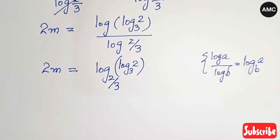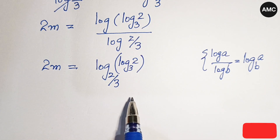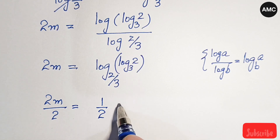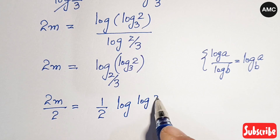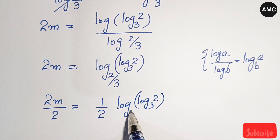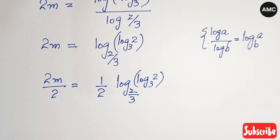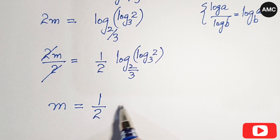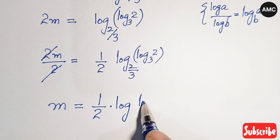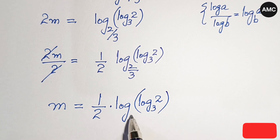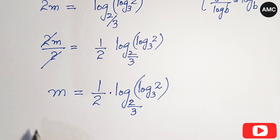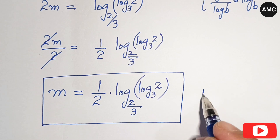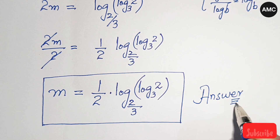Dividing both sides by 2 to isolate M, we get M is equal to 1 over 2 times log of (log 2 to base 3) with base 2 over 3. This is the final value of M — that is our answer. Hence we have found the value of M for this problem.